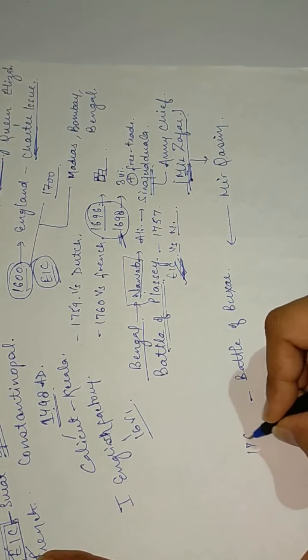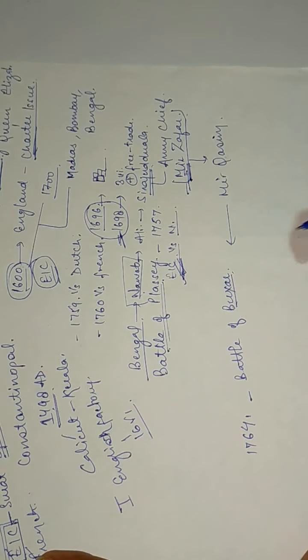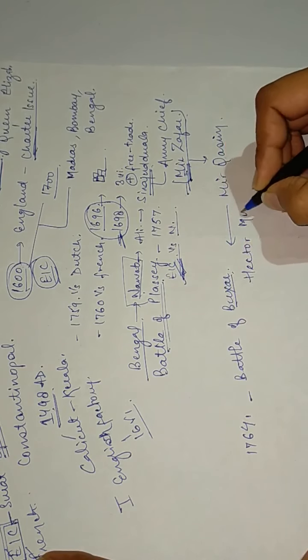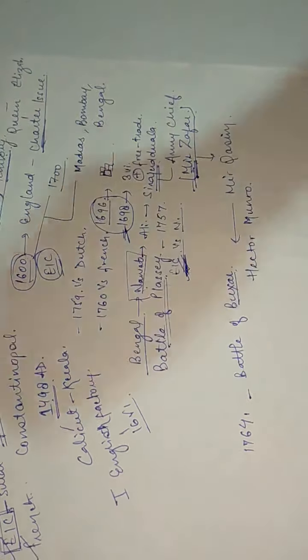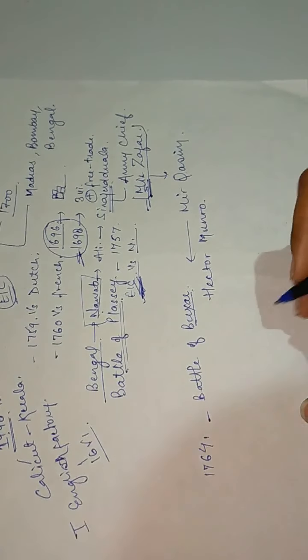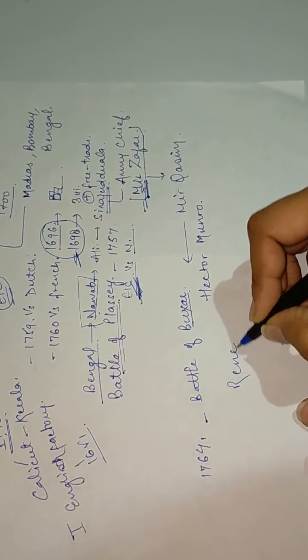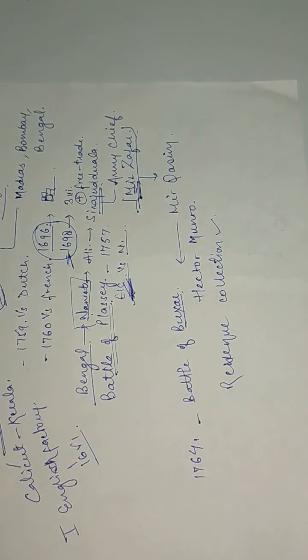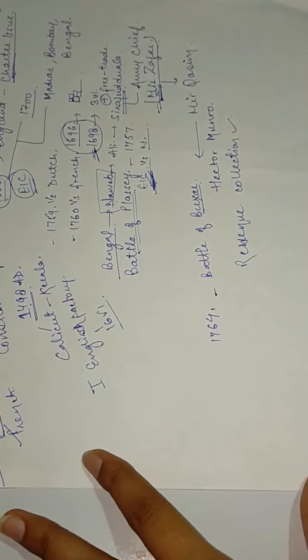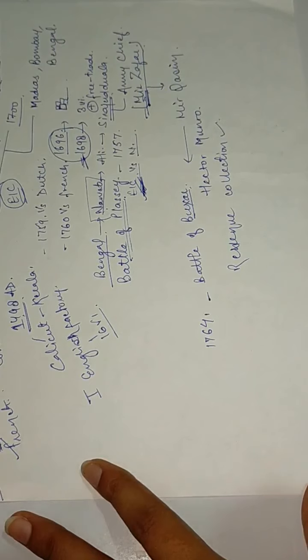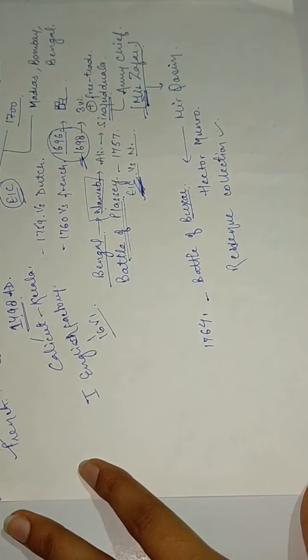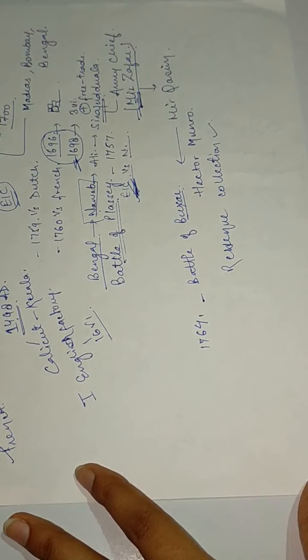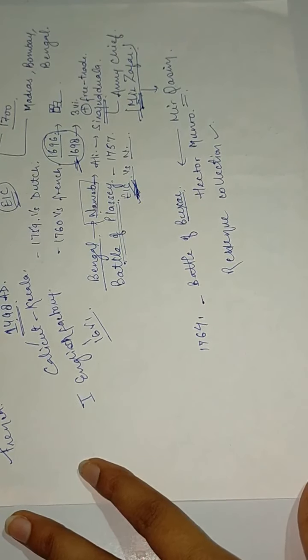The Battle of Buxar was fought in 1764. Buxar is in Bihar. From the East India Company side were Hector Munro and Robert Clive. After this, they got the right to collect revenue. Bengal at that time included all of Bangladesh and some parts of Orissa and Bihar.